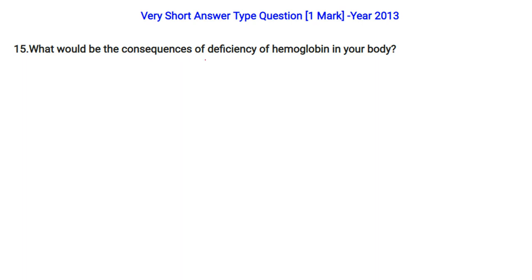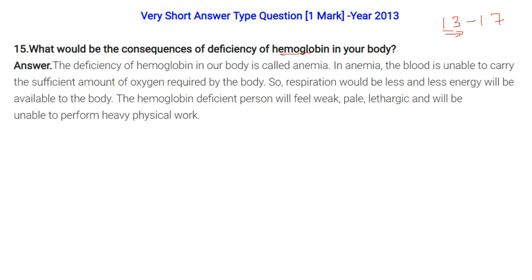What would be the consequence of deficiency of hemoglobin in your body? Normal hemoglobin range for men is about 13-17 g/dL; women have lower levels due to various processes. Deficiency of hemoglobin is called anemia. In anemia, the blood is unable to carry sufficient oxygen required by the body, so respiration decreases and less energy is available. A person will feel weak, pale, and lethargic, and will be unable to perform heavy physical work.